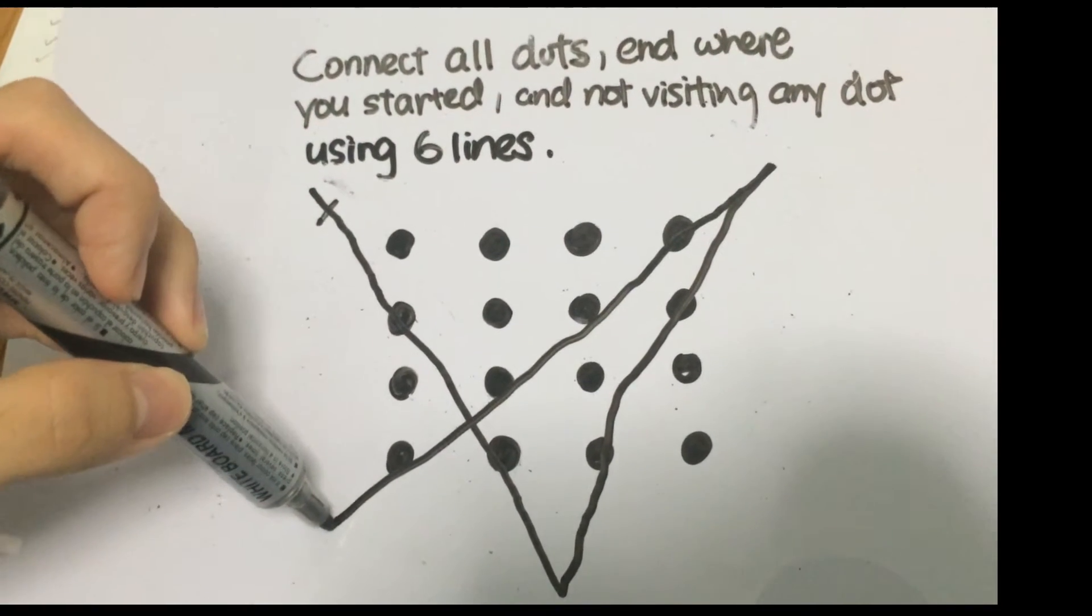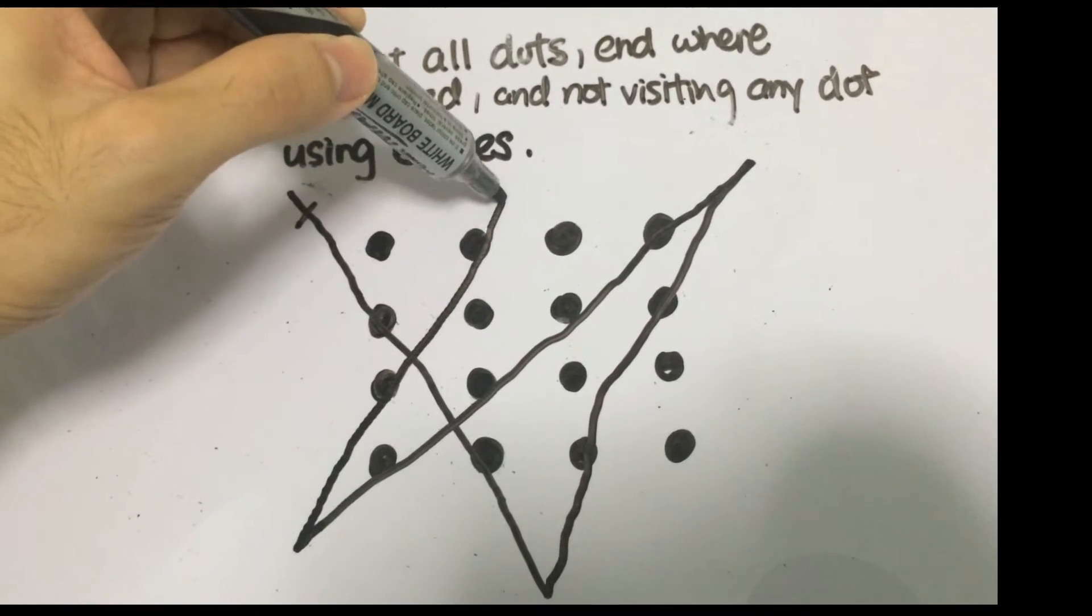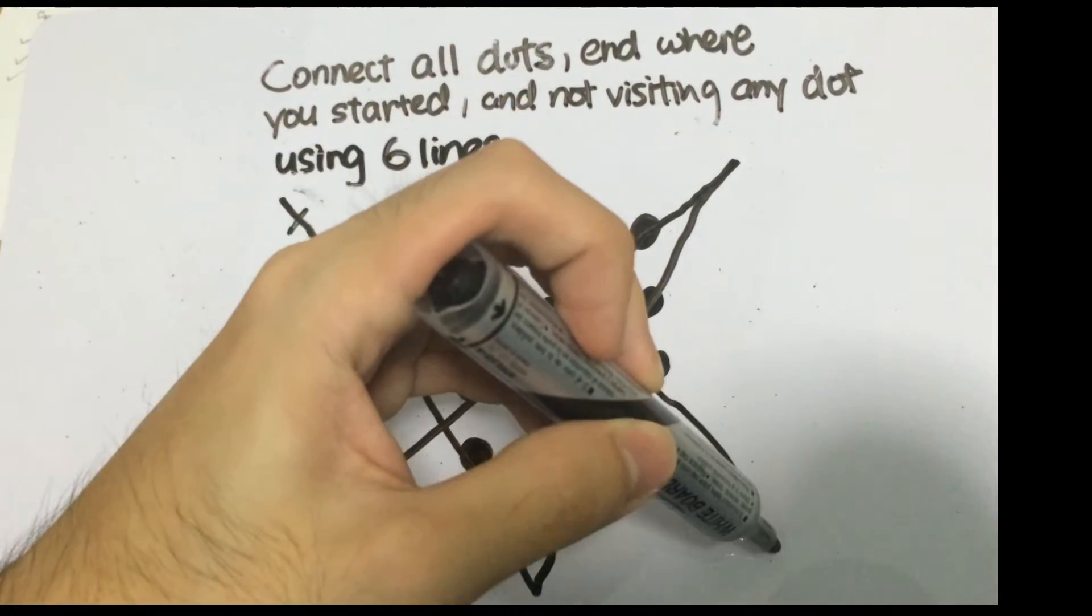Okay, and I'm going to draw this, passing through this dot, this, and this is the fifth line.